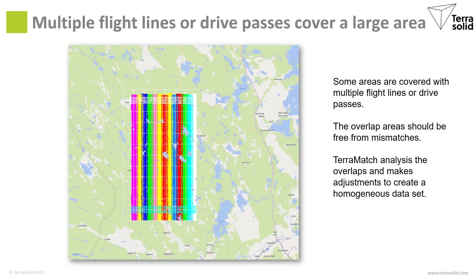To cover a larger area you often use multiple flight lines or drive passes. The overlap between these lines or drive passes should fit perfectly to each other and should be free from mismatches. Teramatch is used for analyzing these overlap areas. It can be used for making observations in the overlap areas and making adjustments to data to create a homogeneous dataset.